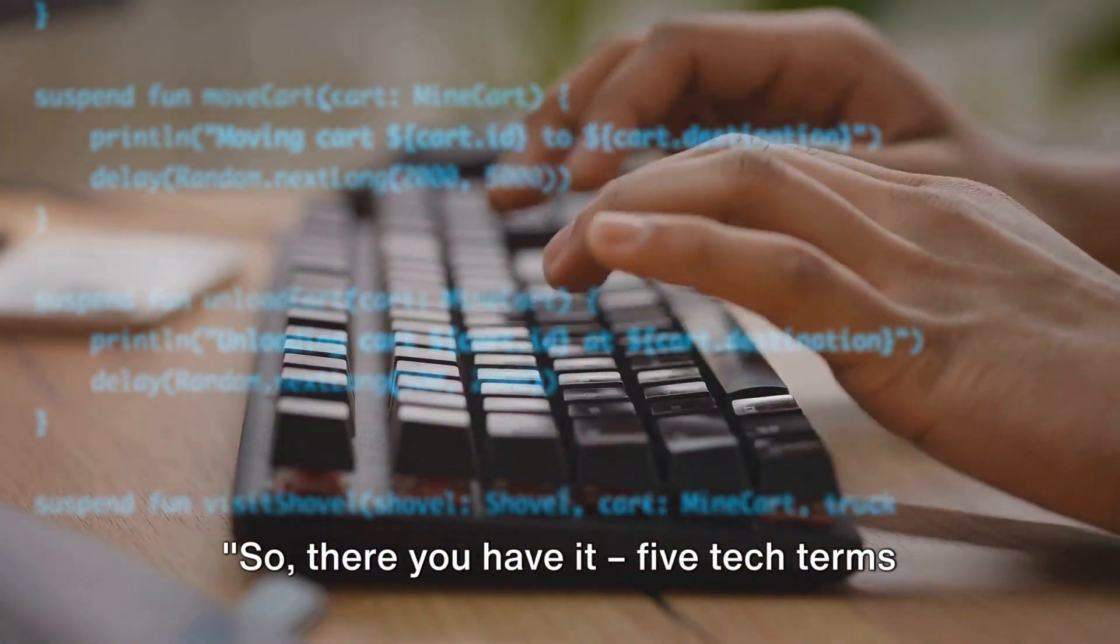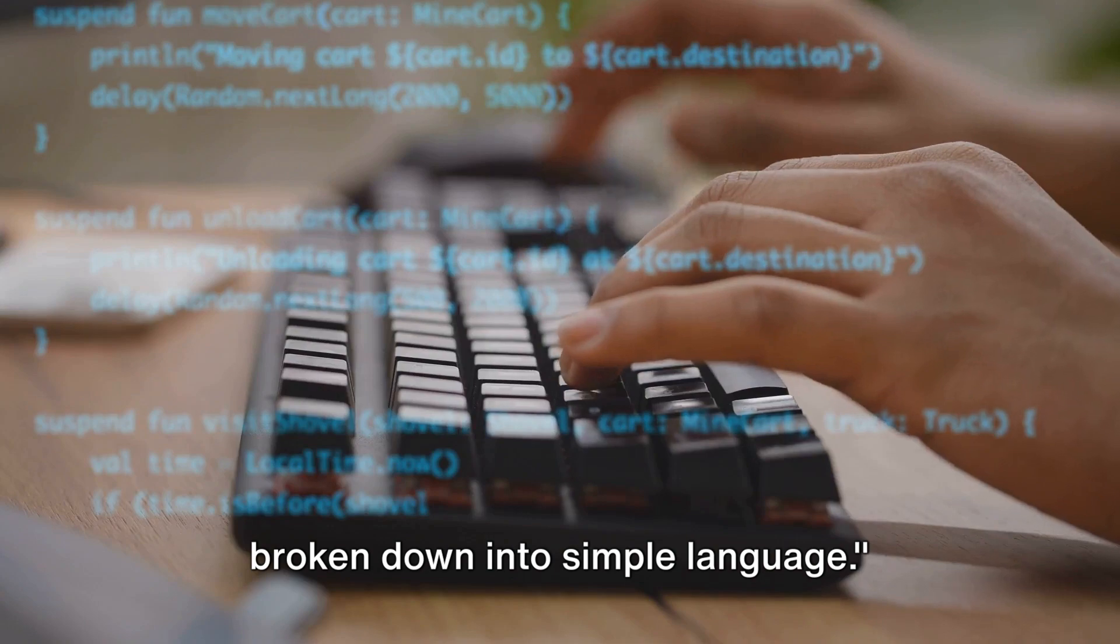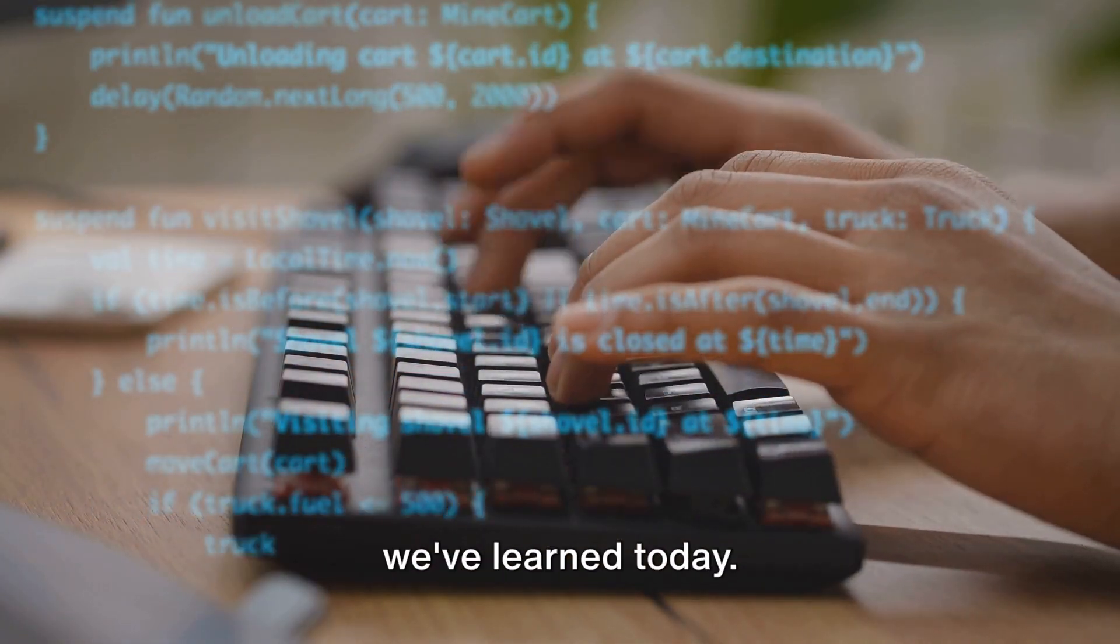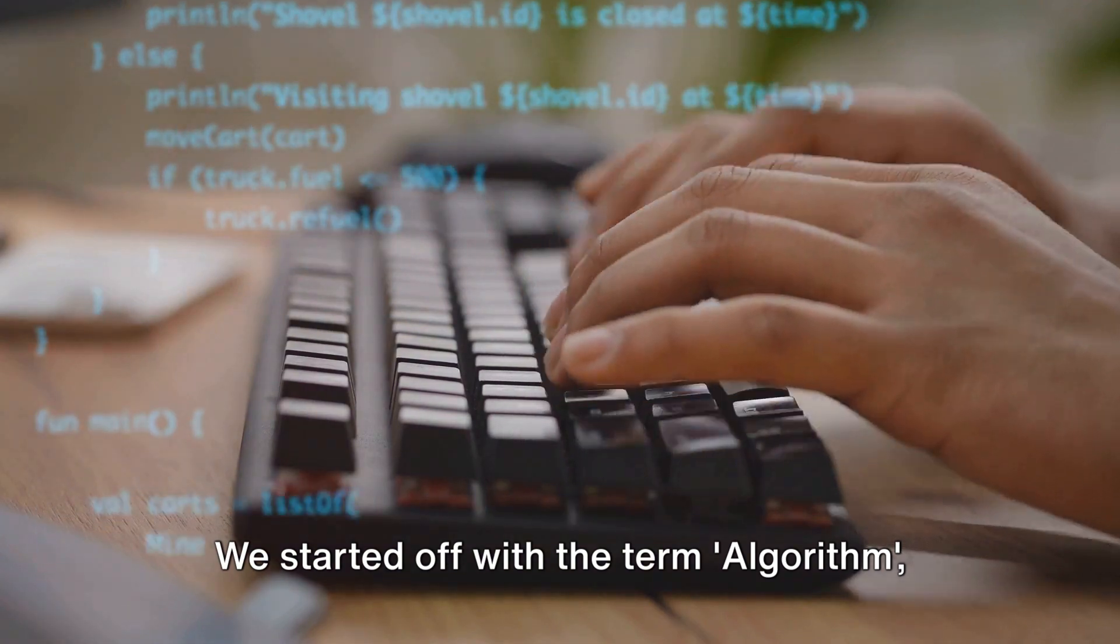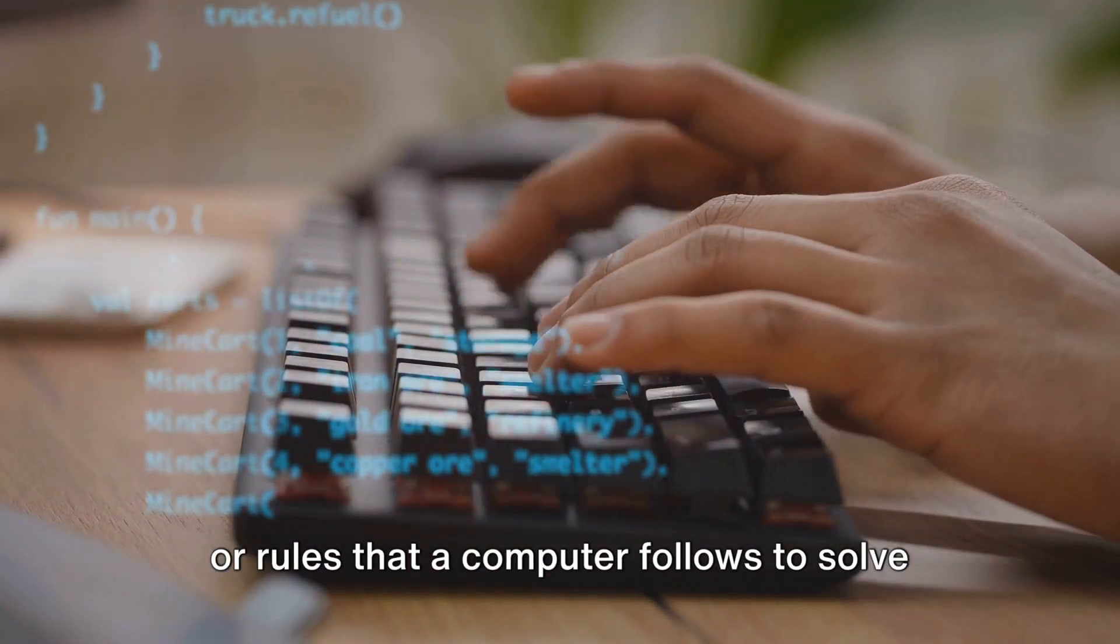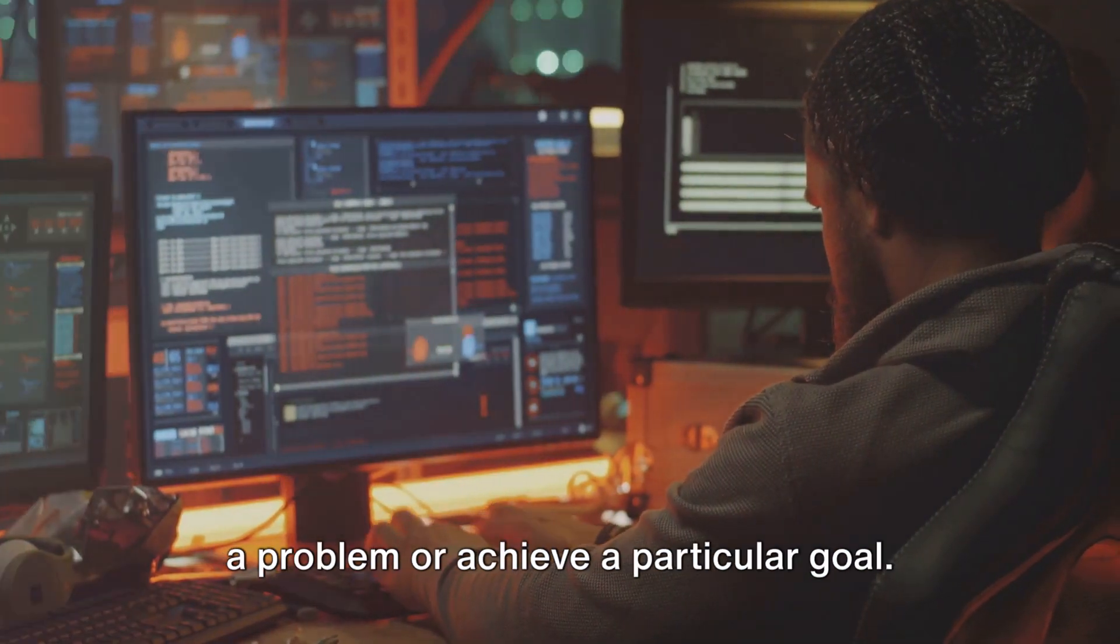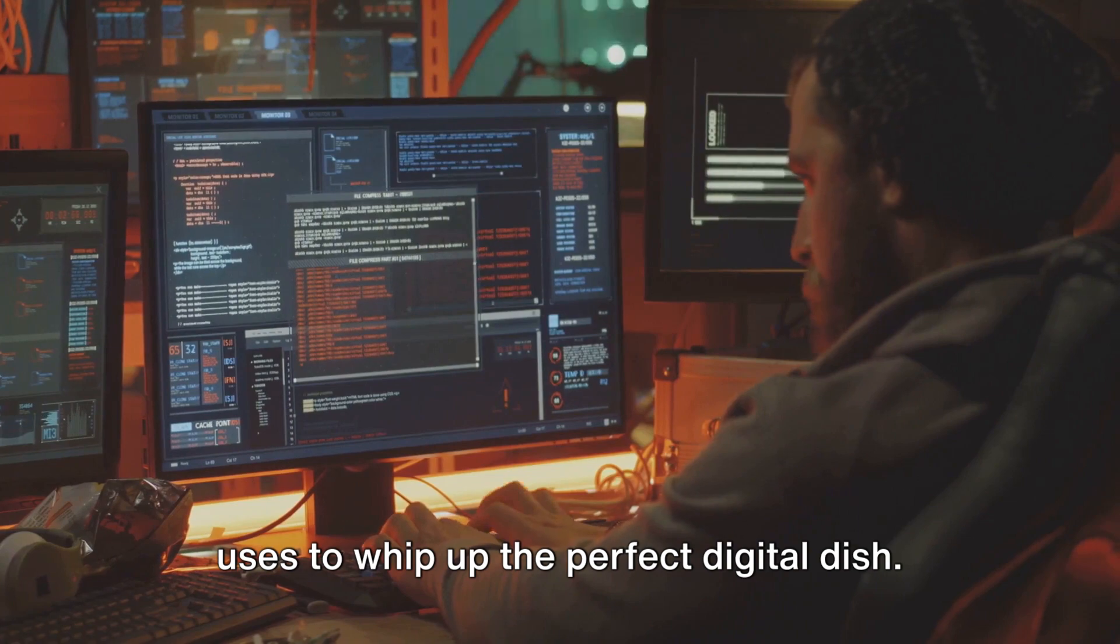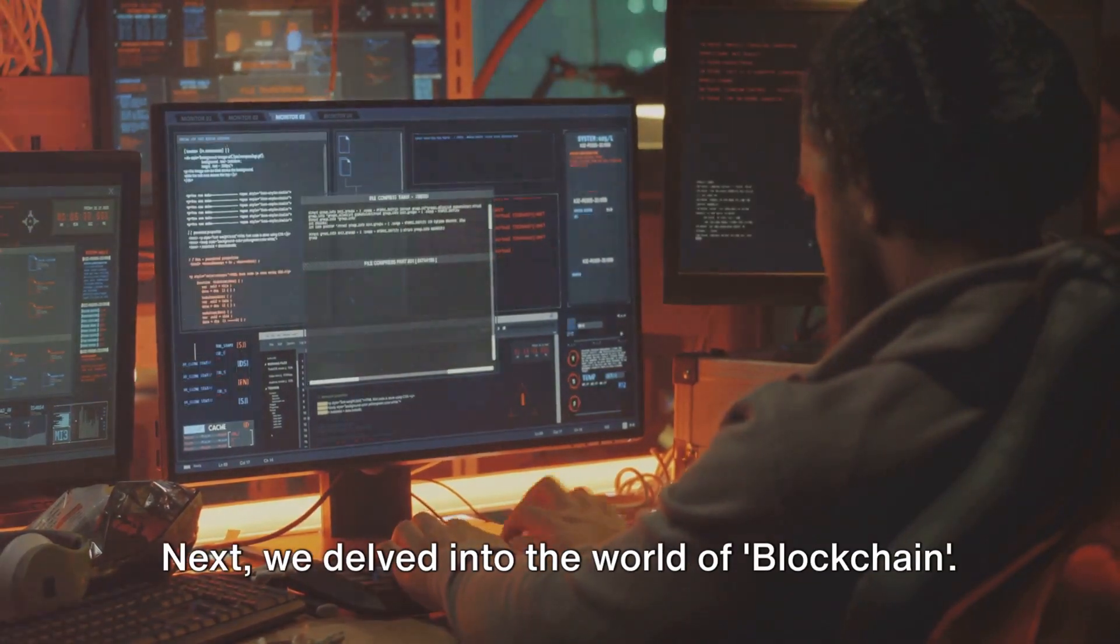So, there you have it. Five tech terms broken down into simple language. Let's take a moment to reflect on what we've learned today. We started off with the term algorithm, which is essentially a set of instructions or rules that a computer follows to solve a problem or achieve a particular goal. It's like a recipe that your computer uses to whip up the perfect digital dish.